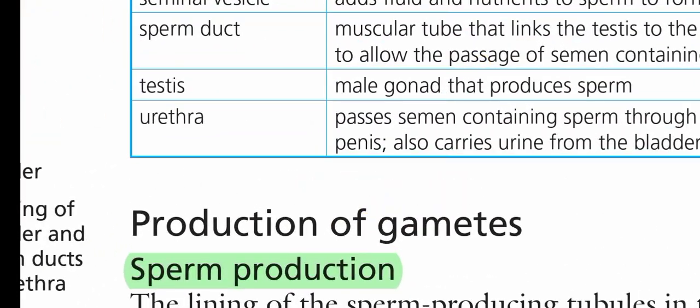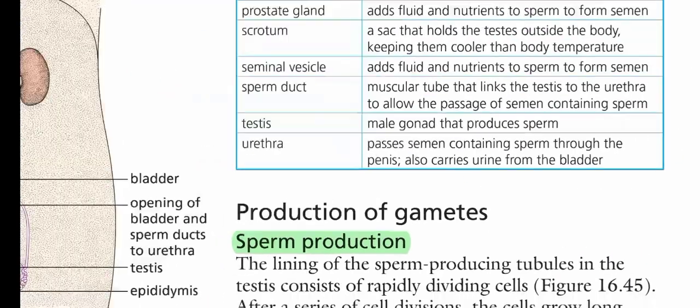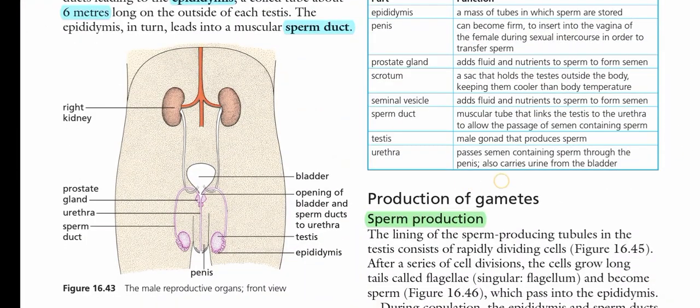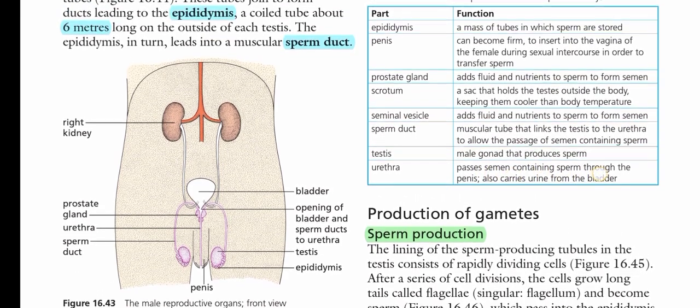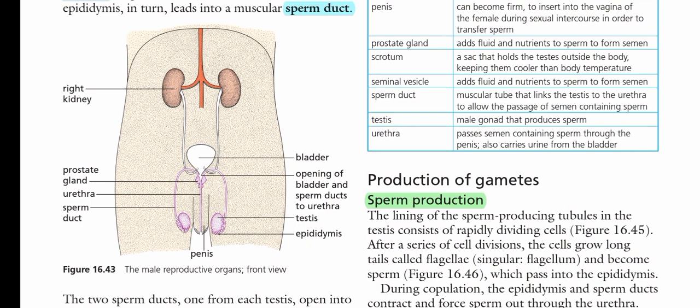The urethra carries semen containing sperm through the penis, and also carries urine from the bladder — the same tube is used for both semen and urine. In contrast, the female urethra is not used for egg removal or reproduction; it is involved in urine removal only. Thank you very much.